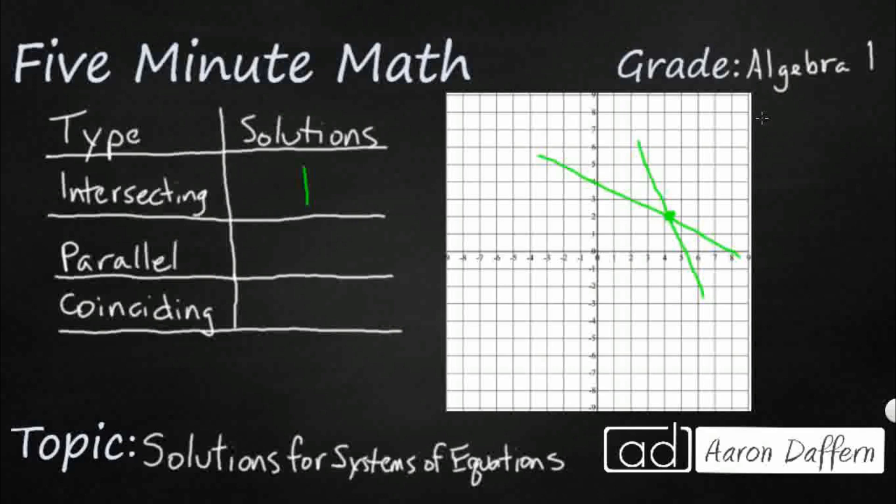Now, parallel lines, so I'll draw those down here, parallel lines have the same exact slope. They never get closer. They never get farther away. So they have no solutions. And if we put them on a graph, we'll see that they never intersect.